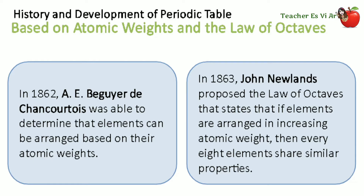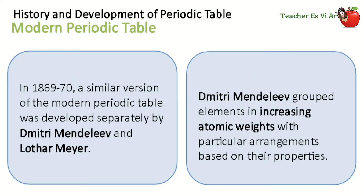In 1862, A.E. de Chancourtois was able to determine that elements can be arranged based on their atomic weights. In 1863, John Newlands proposed the Law of Octaves, which states that if elements are arranged in increasing atomic weight, then every eight elements share similar properties.